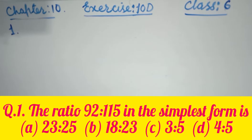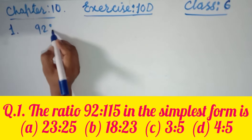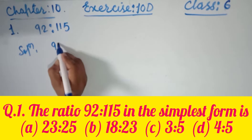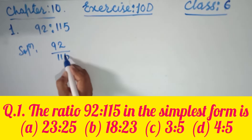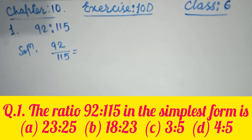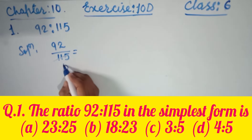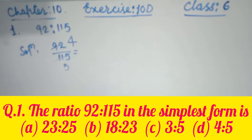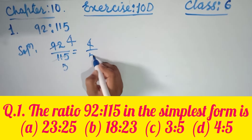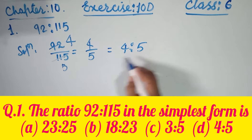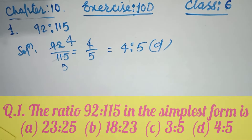Question number one asks for the simplest form of the ratio 92 is to 115. We write this as 92 divided by 115. Both 92 and 115 are divisible by 23, giving us 4 divided by 5. So the simplest form is 4 is to 5, which is the correct option.